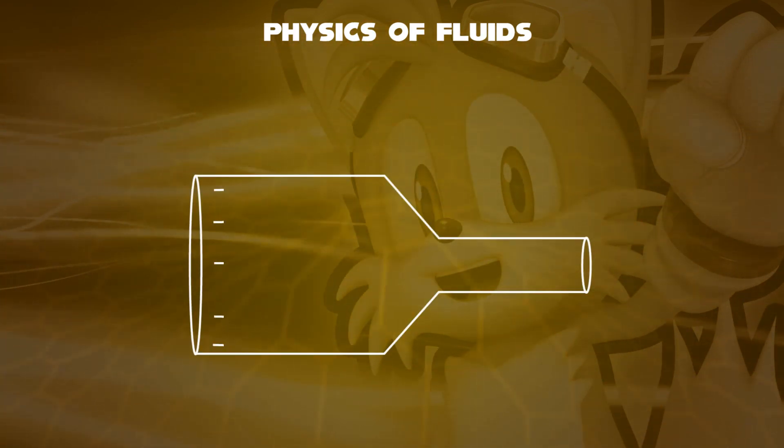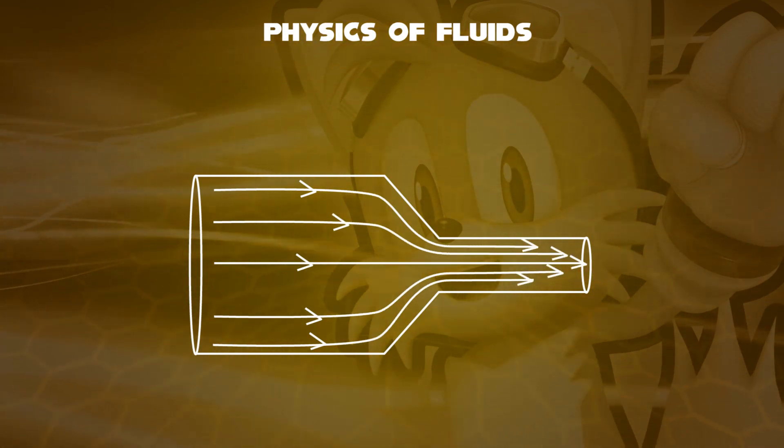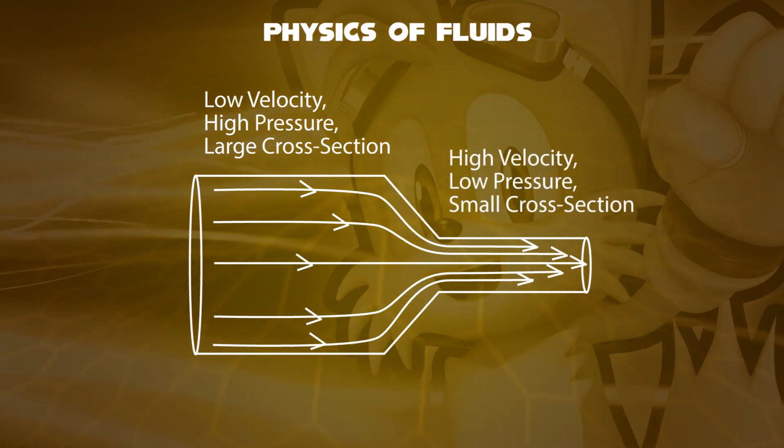Now, if we vary cross-section on the pipe to see what happens to the pressure and velocity of a water flow. First, with a bigger cross-section, water flow is normal, that is low velocity, or a high pressure. If we reduce the size of a pipe's cross-section, the water flow will be of high velocity, or a low pressure.